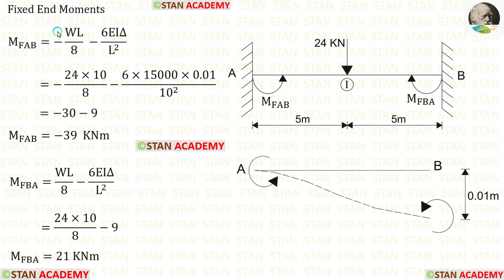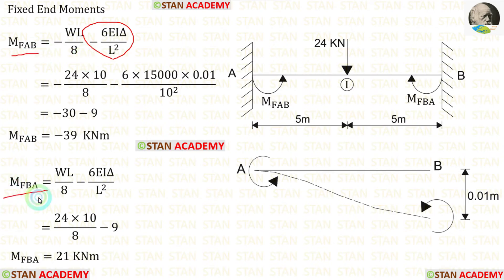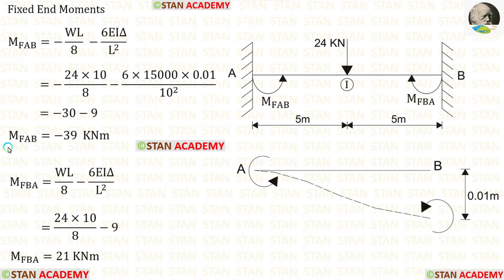Applying the values: W = 24, L = 10, EI = 15,000, δ = 0.01. The fixed end moments due to sinking are the same for MFAB and MFBA. After calculations, we obtain MFAB and MFBA.